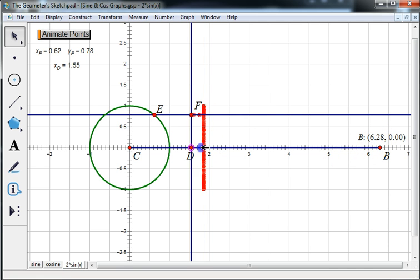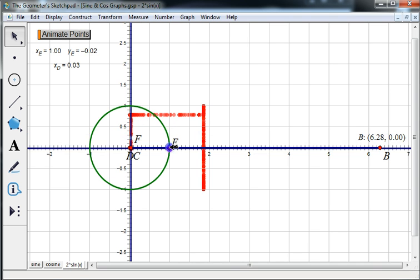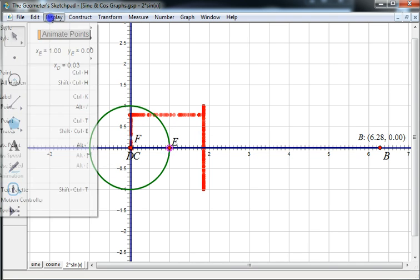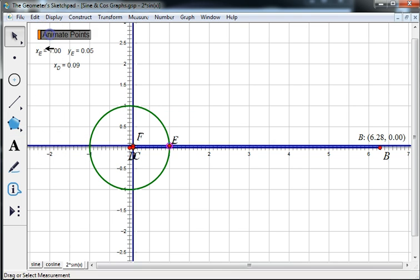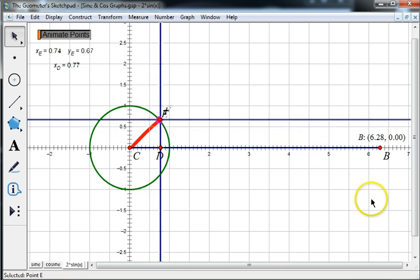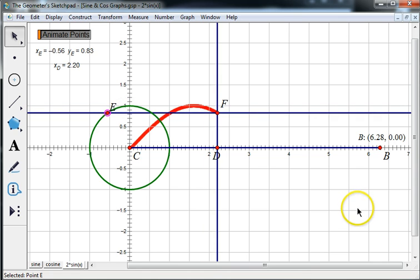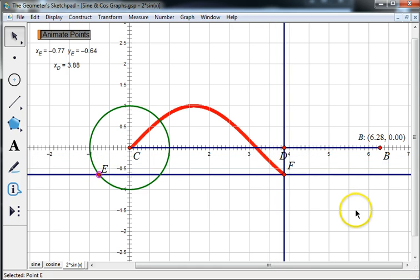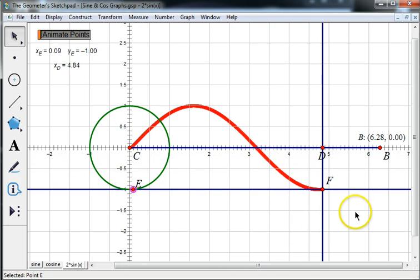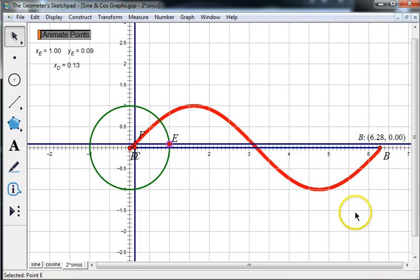So I'm going to bring point d over to the origin. I'm going to put e at 0 radians. I'm going to erase the traces. And we're going to animate point e and d. And as that happens, point f is tracing out the y values of point e, which correspond to sine values, as it moves along the x-axis linked up to point d. And that is a sine curve.